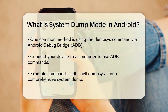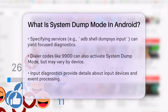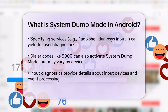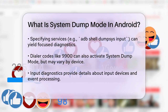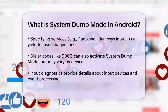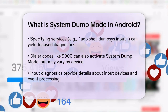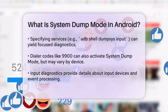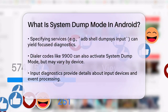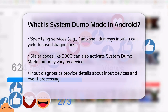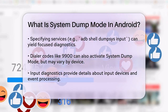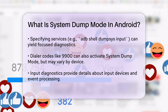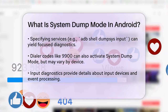When you enter System Dump Mode, you can expect to see a wealth of information. For instance, if you're inspecting input diagnostics, you'll get details about the state of your input devices, such as touch screens or keyboards, and how input events are processed. This includes information about recent state changes, like key presses or touches on the screen.